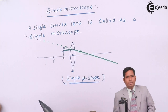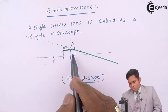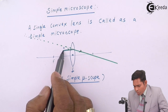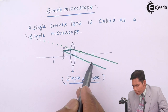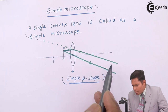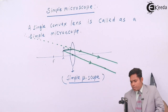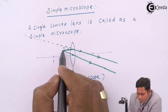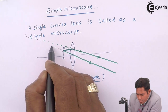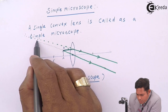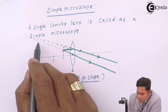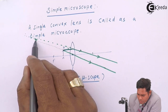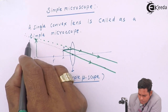I take another ray passing through the optical center. Any ray passing through the optical center will not get deviated — it will go straight. So on this side, it is diverging in nature, and these two rays will never meet on this side. But if I extend the rays in the backward direction, they will meet somewhere here, and the image is formed here. This image is called A-dash B-dash.